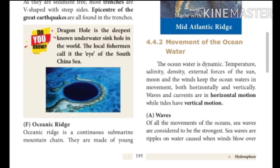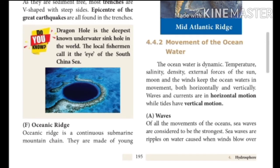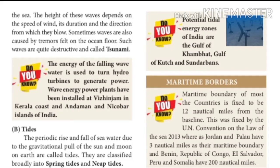Next, we are going to see the movement of ocean water. The ocean water is dynamic. Temperature, salinity, density, and external forces of the sun, moon, and wind keep the ocean water in movement both horizontally and vertically. Waves and currents are in horizontal motion while tides have vertical motion. Sea waves are considered the strongest movement of the ocean. Sea waves are ripples on water caused when winds blow over the sea. The height of these waves depends on the speed of wind, its duration, and the direction from which they blow. Sometimes waves are also caused by tremors felt on the ocean floor; such waves are quite destructive and are called tsunami.